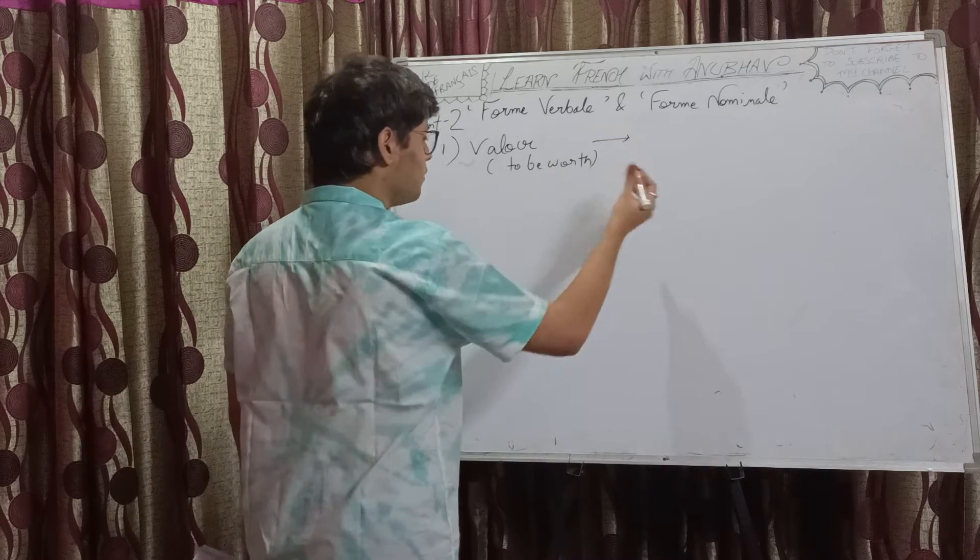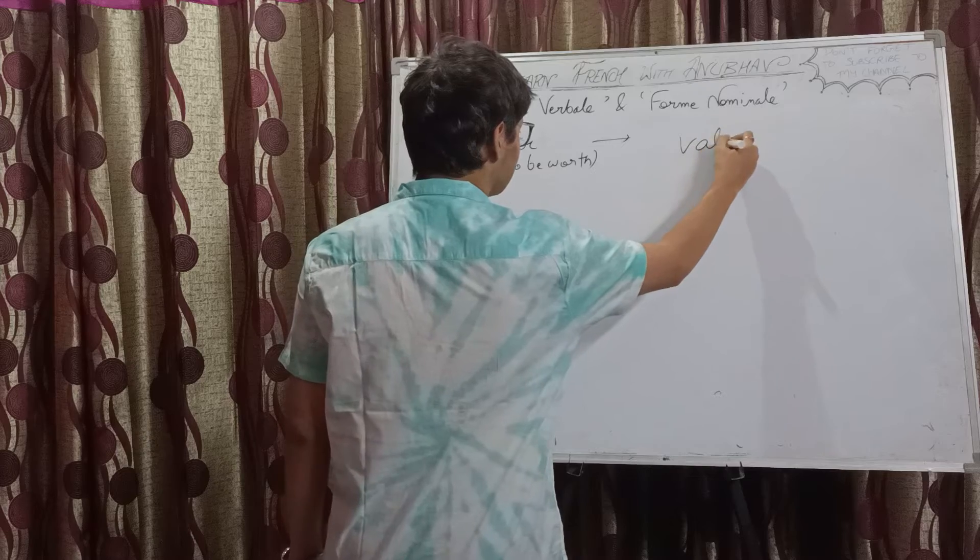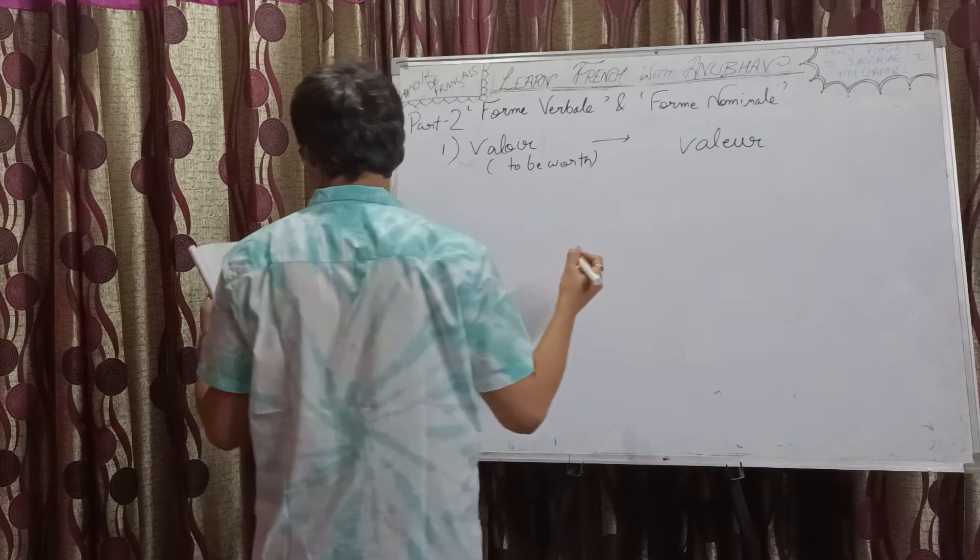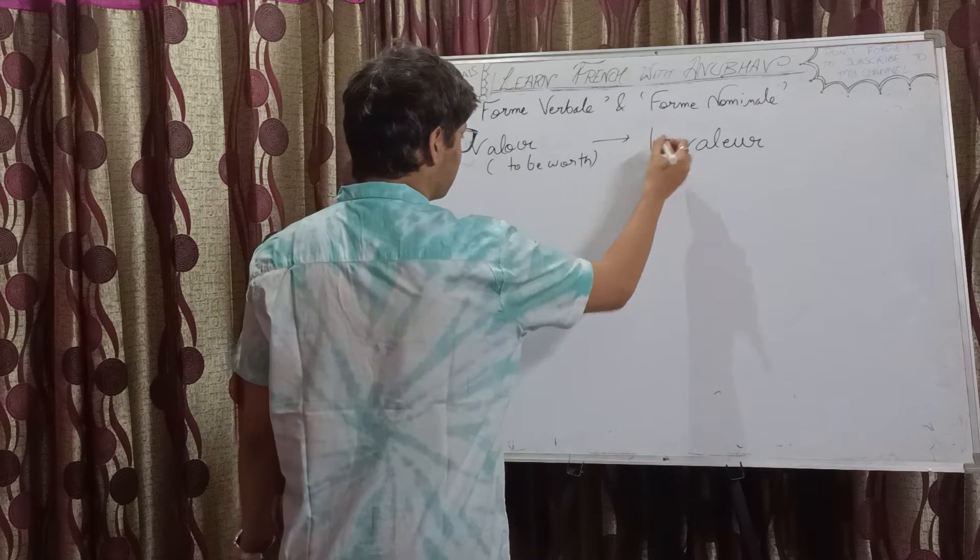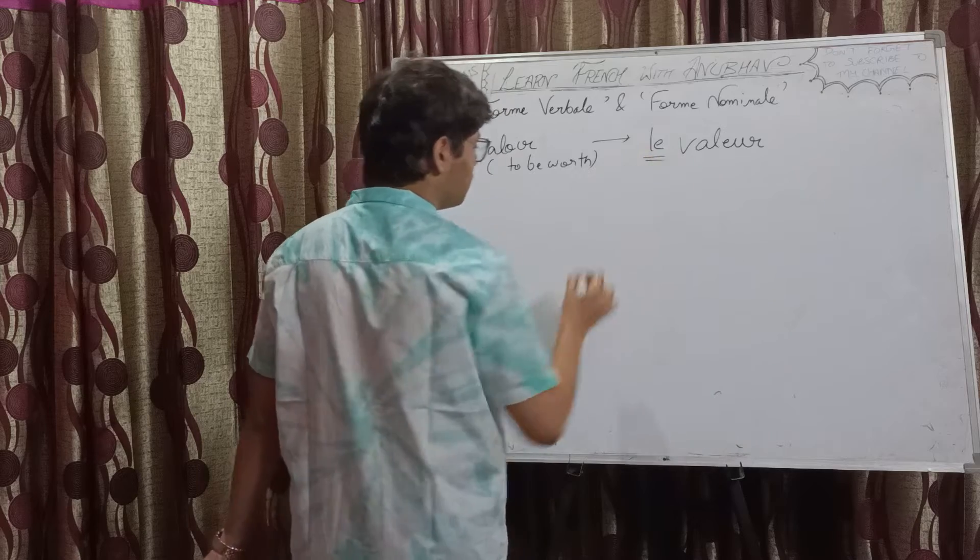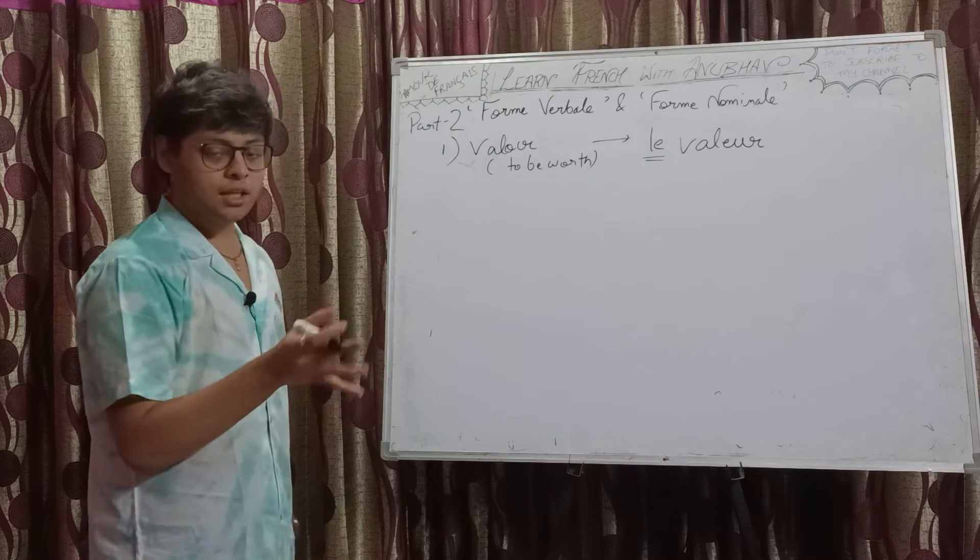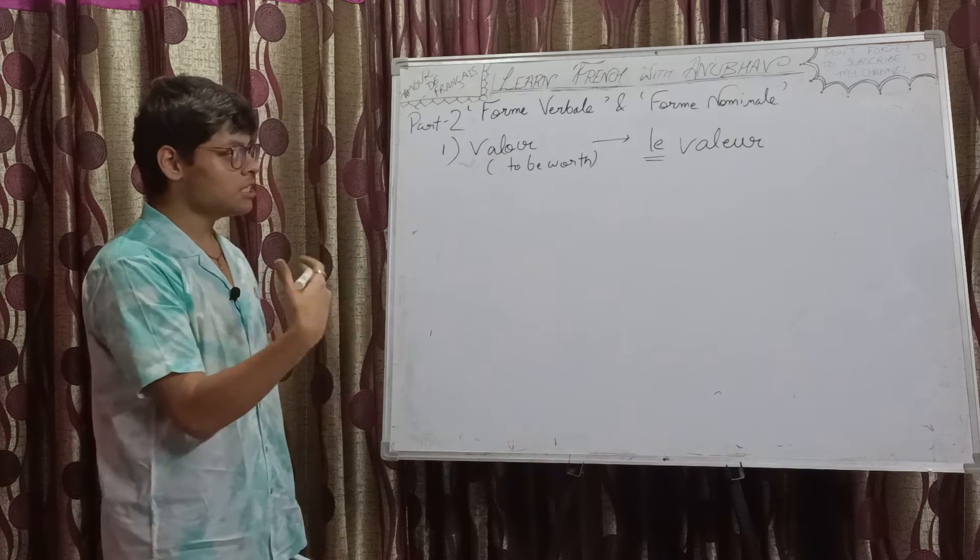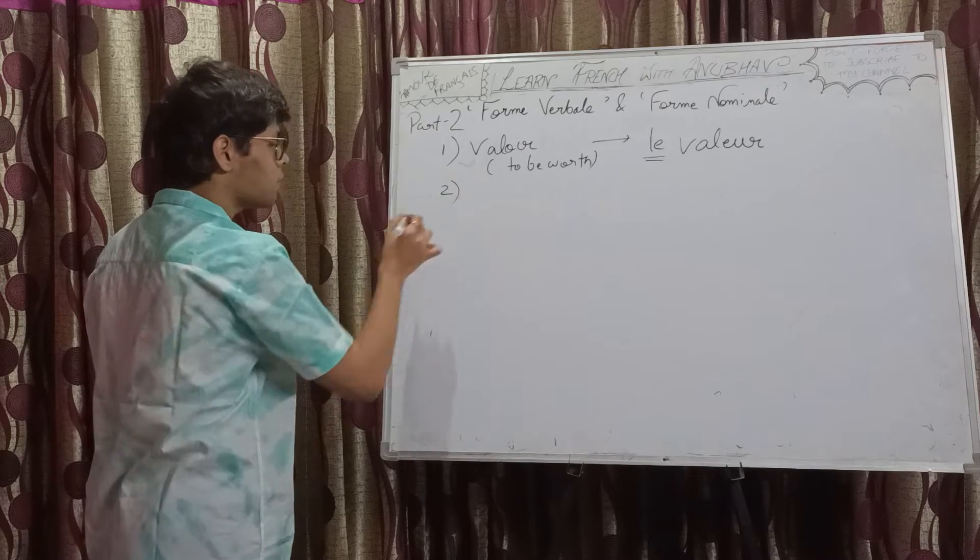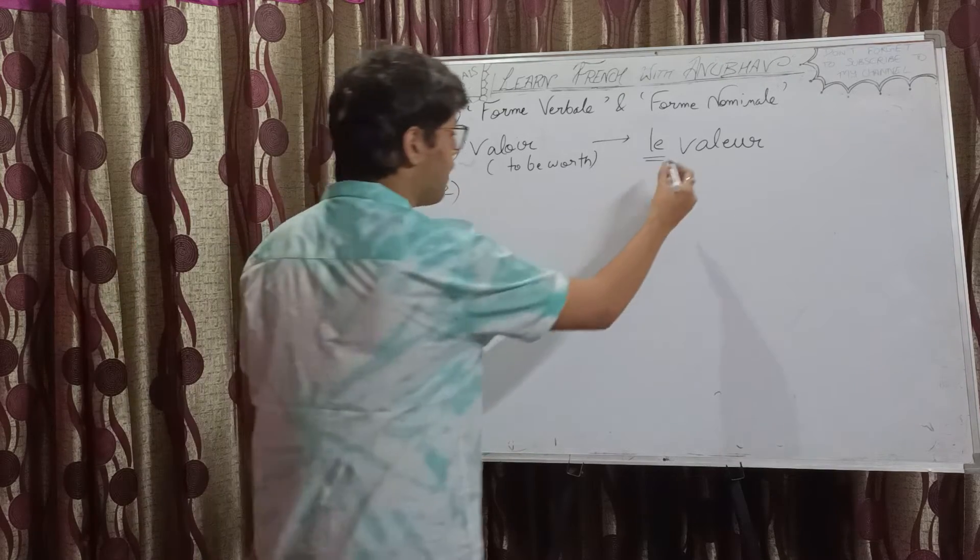The first verb is valoir. The noun form will be simply valeur, masculine singular. As I said in my previous video, I will be writing the articles to indicate which one is masculine singular, which one is feminine singular. Valeur means value.